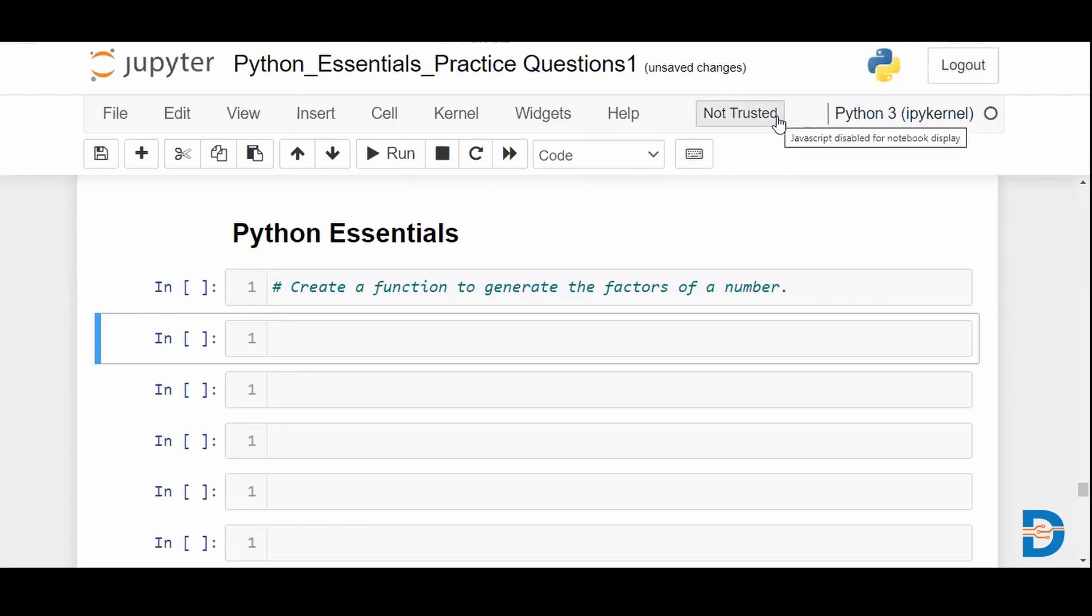Hello and welcome to another video on Python Essentials. Today we're going to be creating a function that generates the factors of a number. So given a number like 60, we're talking about all the factors.